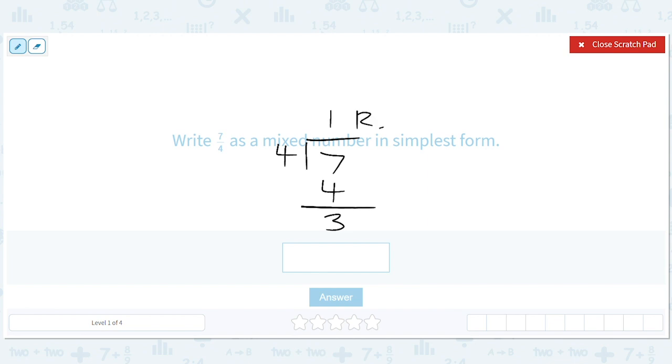4 doesn't go into 3. And so, the way we write that is we have 1 whole and then 3 left out of 4. So, 1 and 3 fourths.